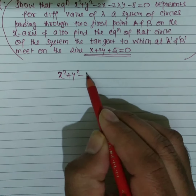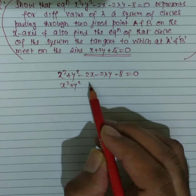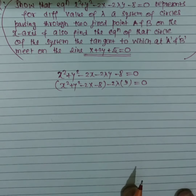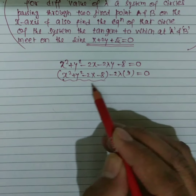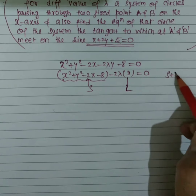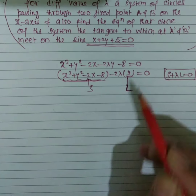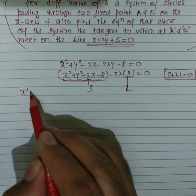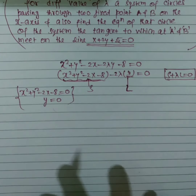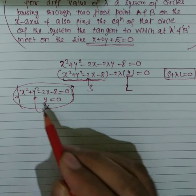The circle equation is x² + y² − 2x − 8 = 2λ, or equivalently x² + y² − 2x − 8 − 2λ = 0. This is of the form S + λL = 0, which is a family of circles — the intersection of circle S and line L. Substituting y = 0 to find the fixed points of intersection.